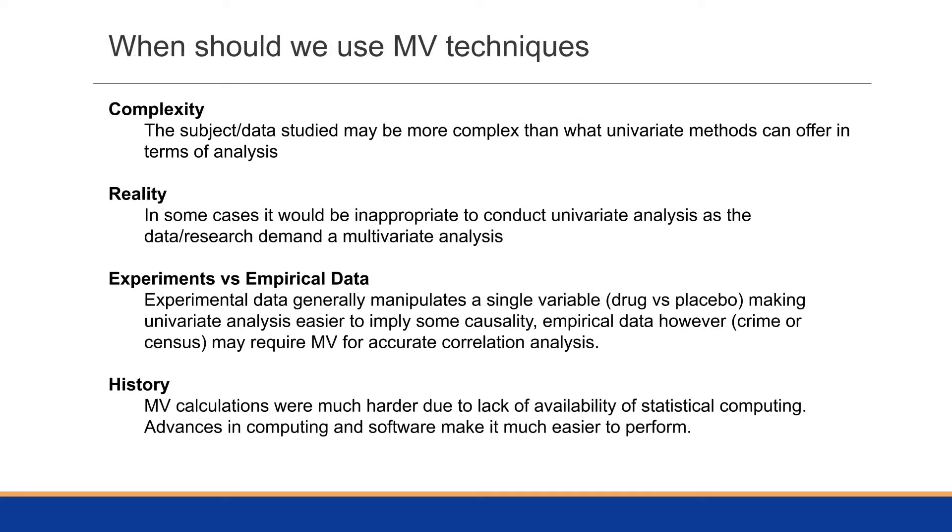When should we use multivariate techniques? The first one is complexity, when the subject that we're studying is more complex than what univariate methods generally offer. For example, if we're dealing with psychology, we may want to understand a person's motivation and self-control and self-efficacy simultaneously as opposed to just exploring things in a silo.